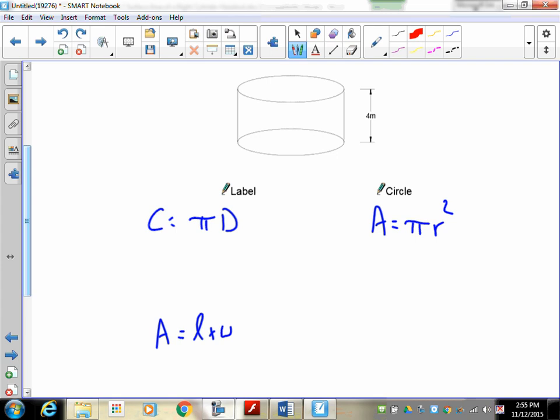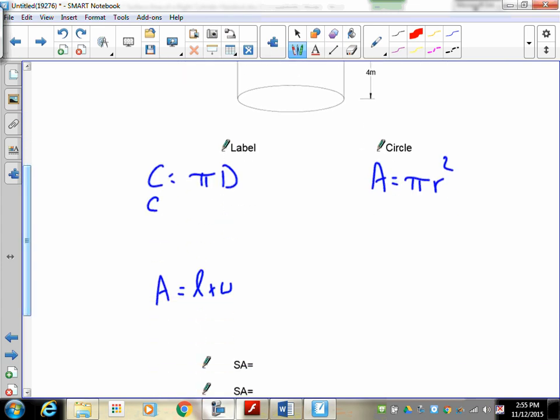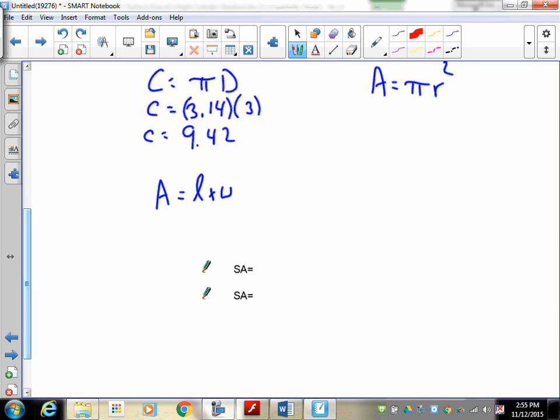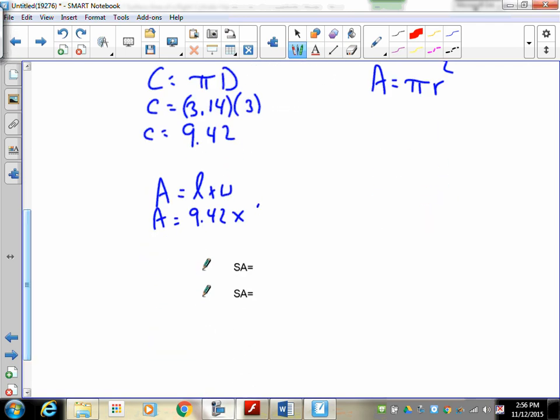All right. So, first thing, what is our diameter? It's 3 meters. So, our circumference is going to be equal to 3.14, multiply that by 3. So, my circumference is going to be 9.42. Now, that 9.42 is my length. My width is going to be how tall the tank is and I believe it's 4 meters. So, my area of the label or the distance around the outside of this tank is 37.68.